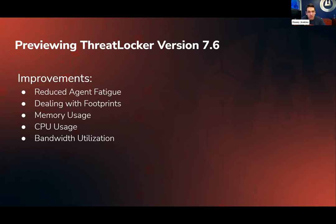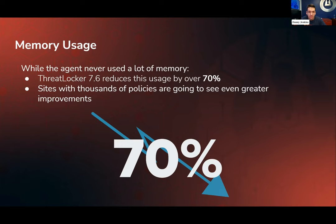There are new changes coming in version 7.6, which goes into beta next week, and it's going to make quite a big difference to your agents and footprint on the system. In a normal environment, we're going to reduce memory usage by over 70%, and this doesn't impact speed anywhere. We've managed to store and query things more efficiently. For environments that have large amounts of policies, that reduction will be even greater. We've really gone back to the core of our product, rewriting things that have existed for years, and we've managed to reduce the memory footprint massively.